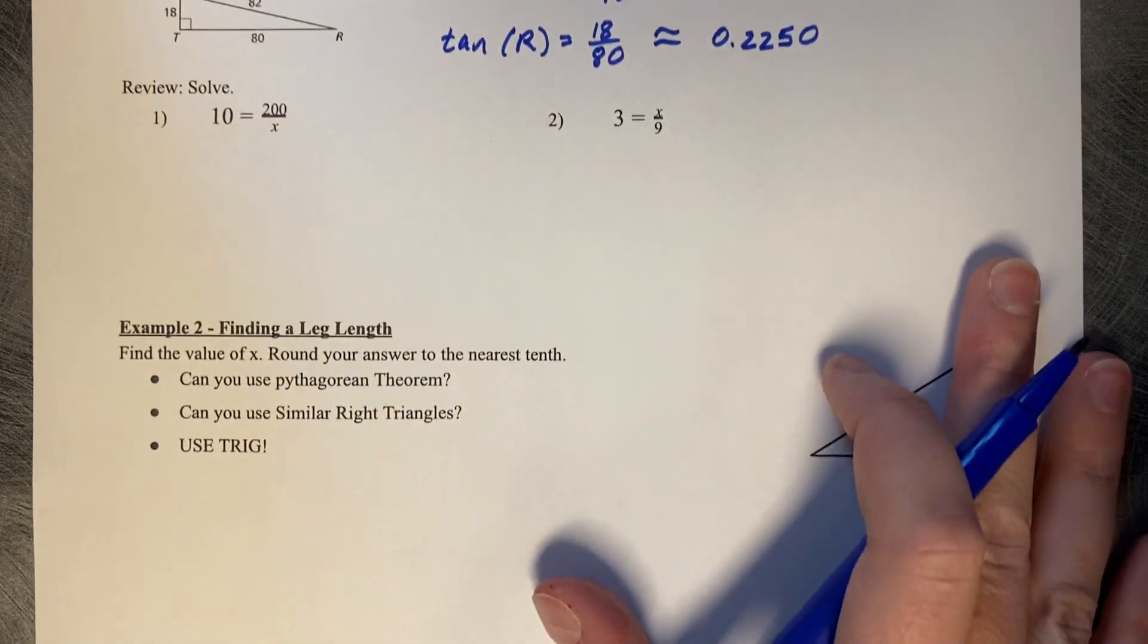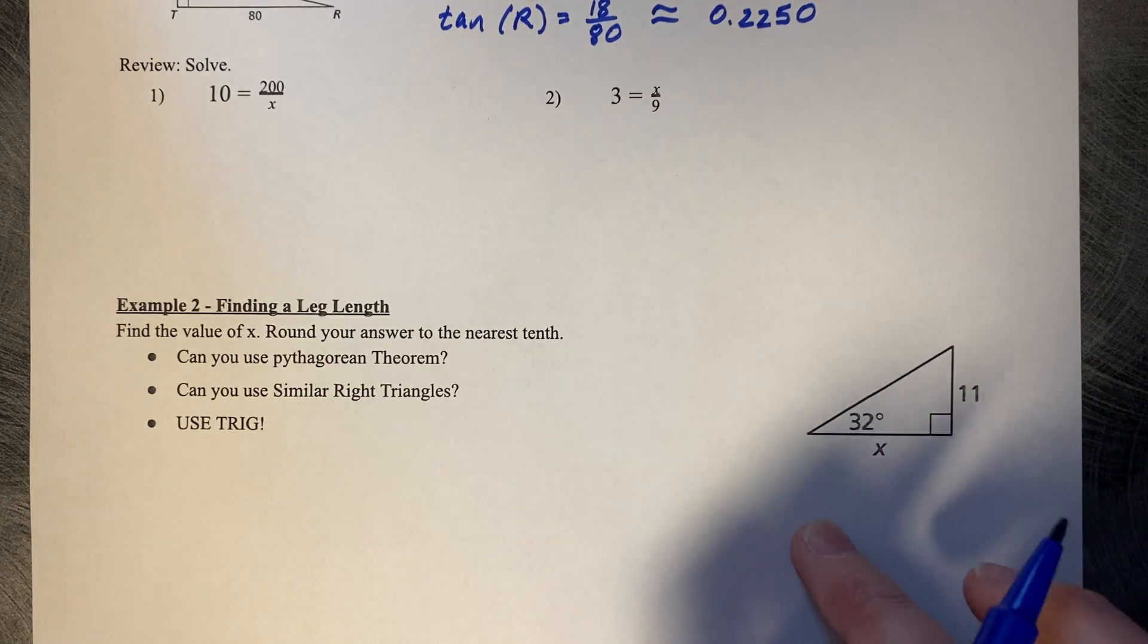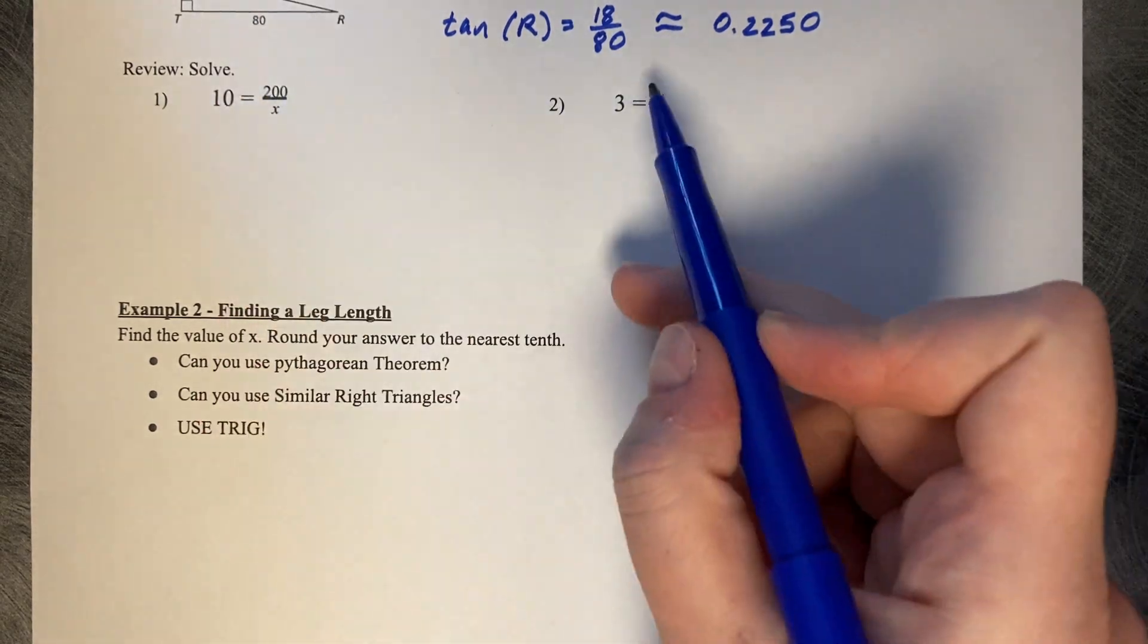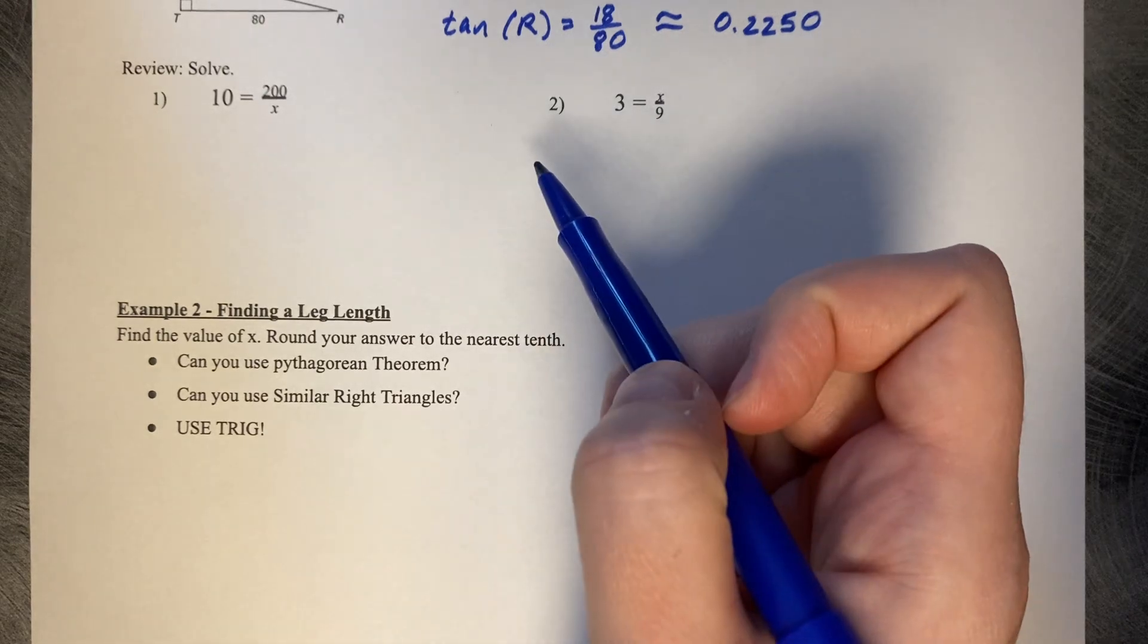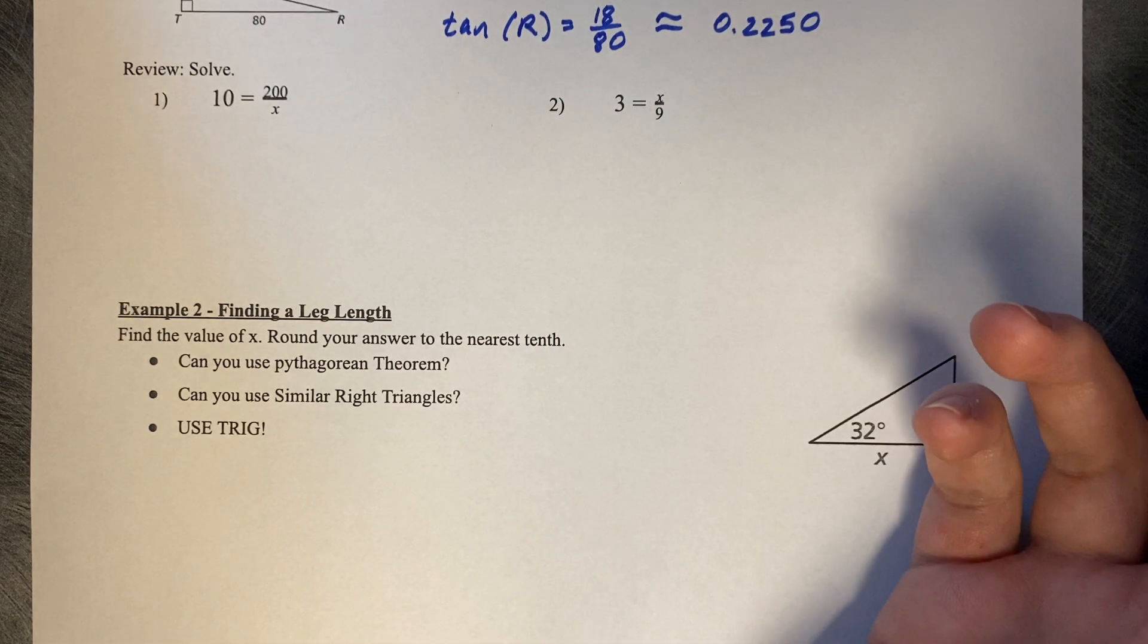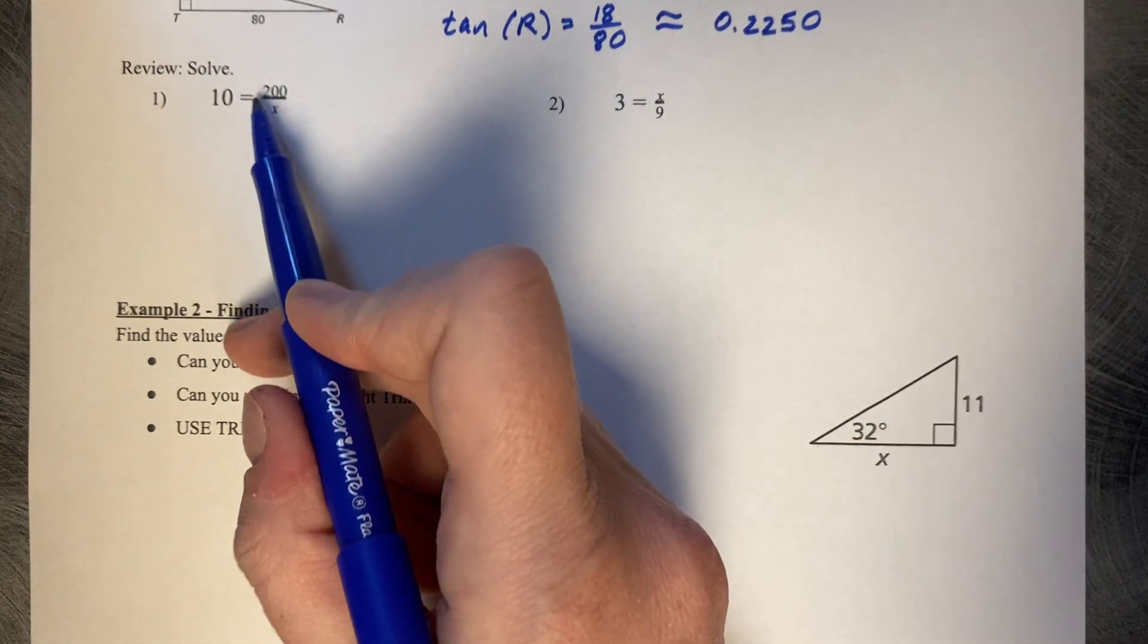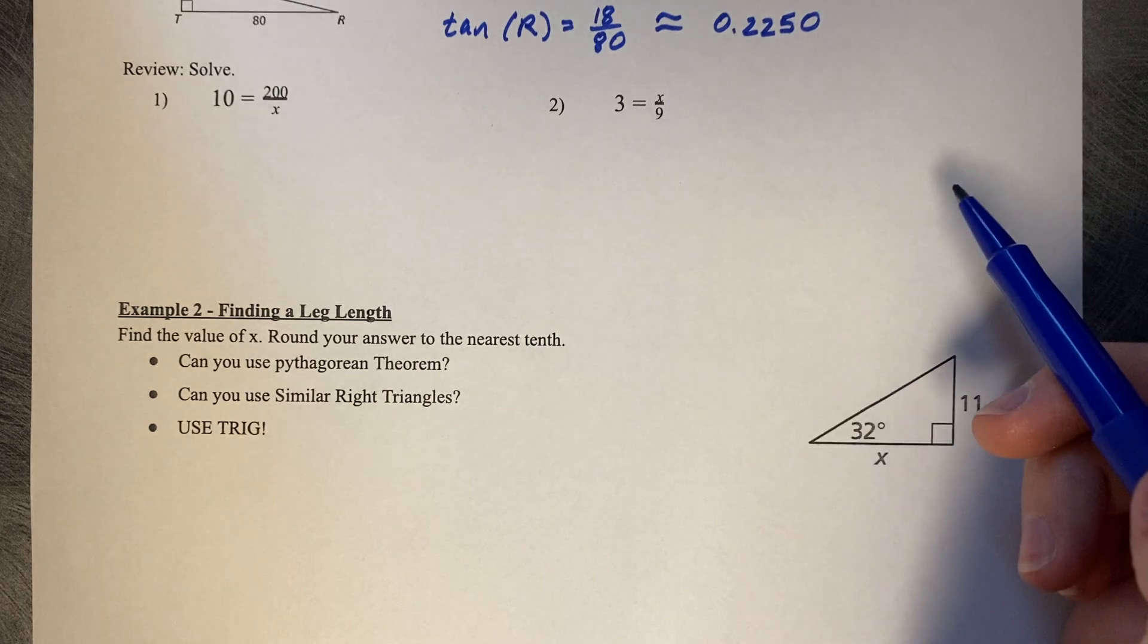Before we start to use the tangent ratio to help us find missing lengths on triangles like this one, we need to review how to solve equations that look like this, where you've got a fraction on one side. Notice that in this equation the x is in the denominator, and in this equation the x is in the numerator.